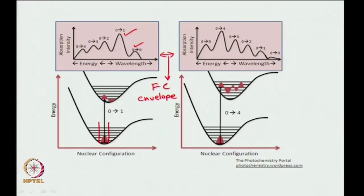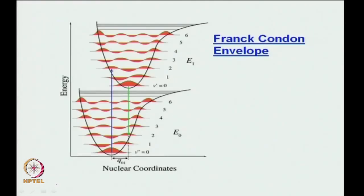In the first case, the 0-to-1 transition has the maximum intensity. In the next case, the 0-to-4 transition has the maximum intensity. The difference between these two is that in the latter case you have a much larger difference in internuclear distance between the ground state and the excited state. That is typically how it comes about. Moving on again, we are looking at the Franck-Condon envelope.